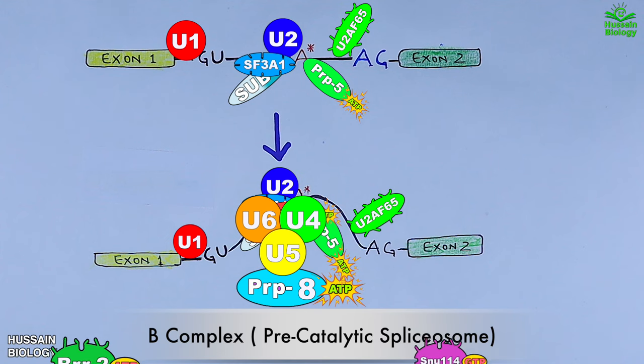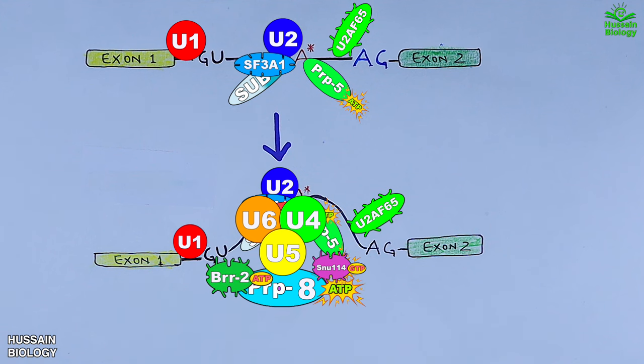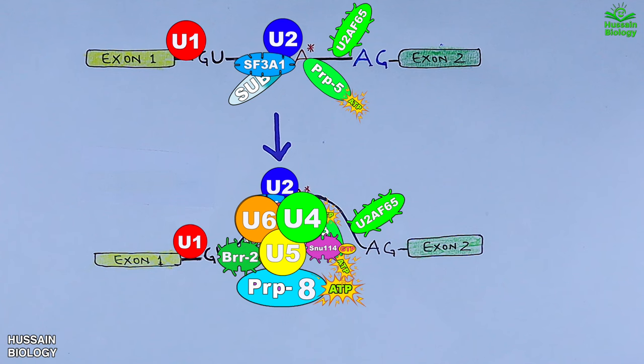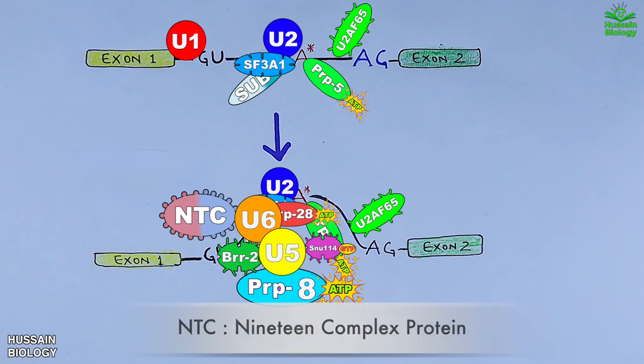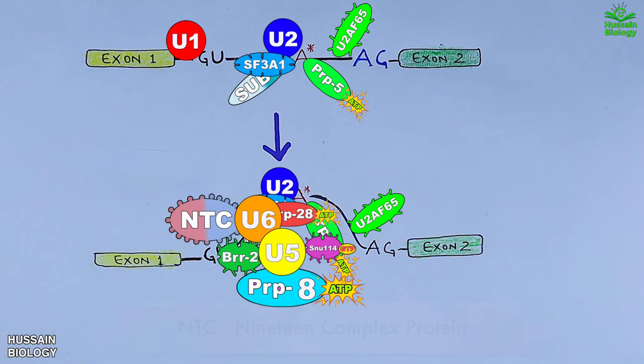In the next step, BRR2 ATP and SNU114 GTP come in and bind with complex B. PRP8, BRR2, and SNU114 are integral components of U5 SNRNP. This BRR2 disrupts the U4-U6 base pairing and U2-U6 base pairing. Just after BRR2 binding, U1 and U4 leave the spliceosome. At the same time, a protein complex associated with PRP19, named the 19 complex or NTC, also joins the spliceosome. This NTC protein activates the spliceosome complex. So at the end we get the B activated complex.